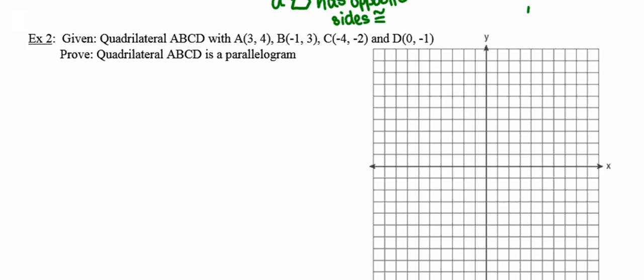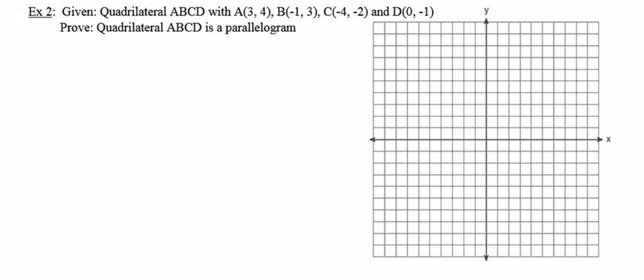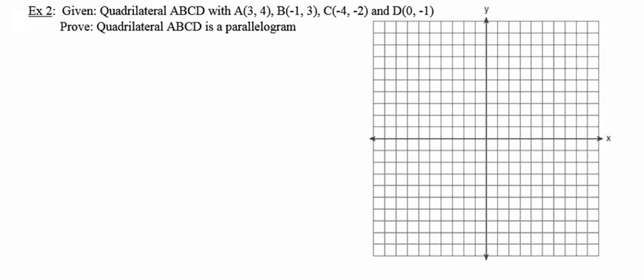Number two is a little bit different in that now we're looking at a quadrilateral on the coordinate plane. But the idea that we're going to prove — that the quadrilateral is a parallelogram — is still the same.